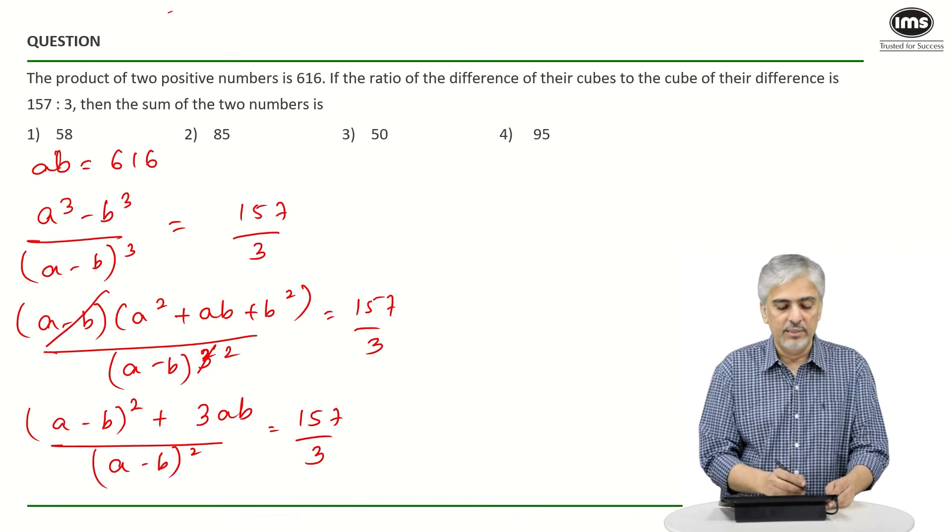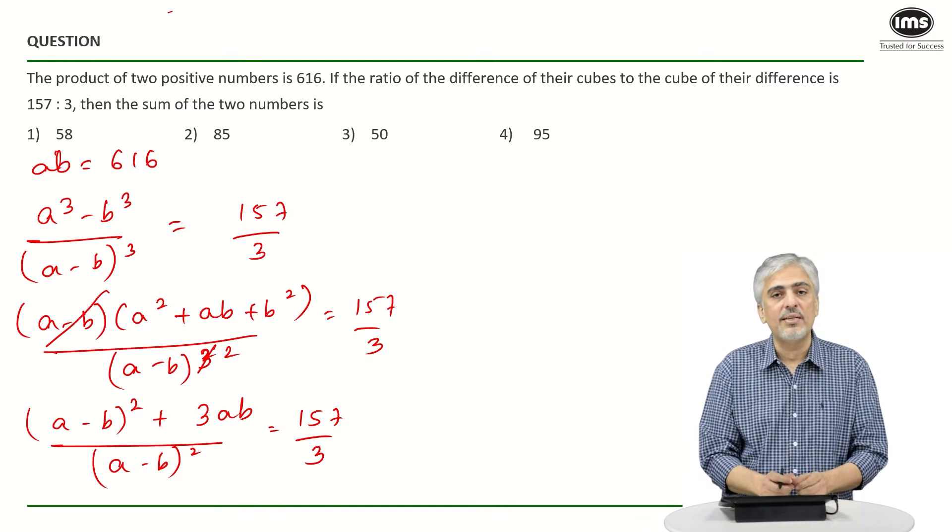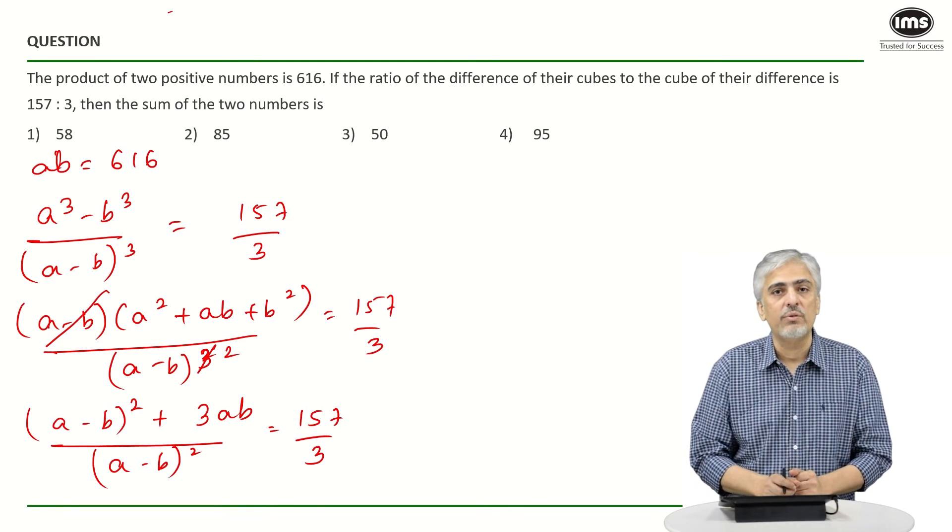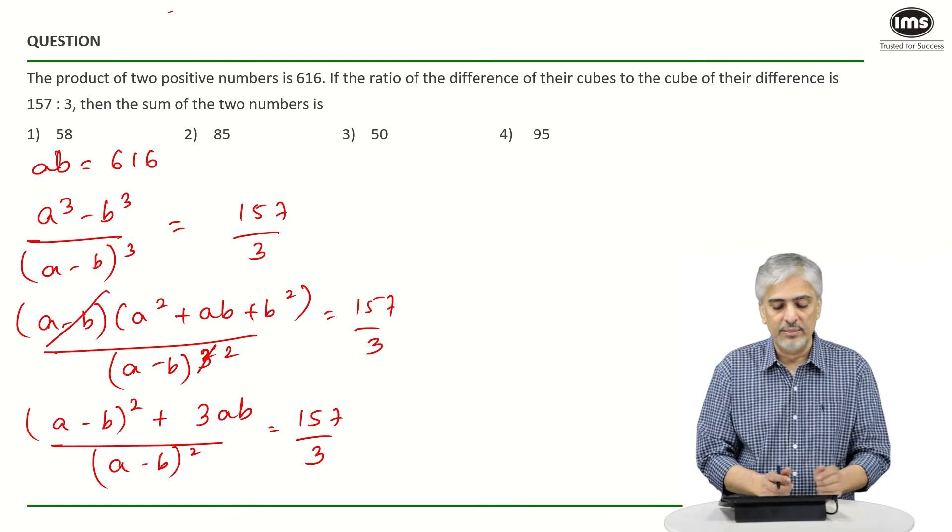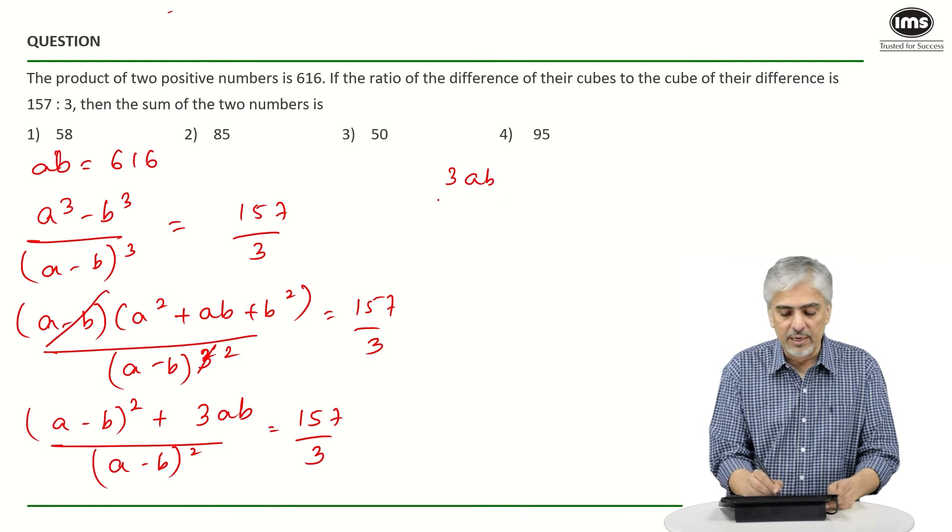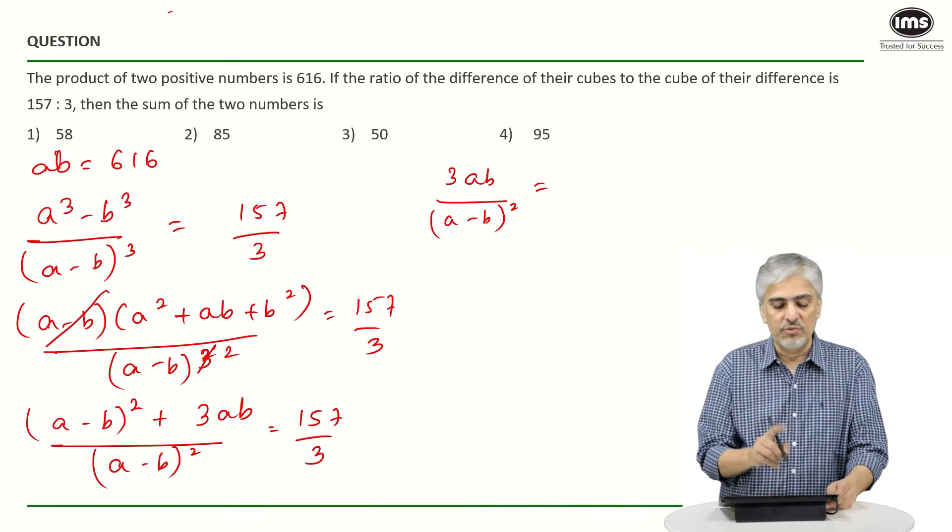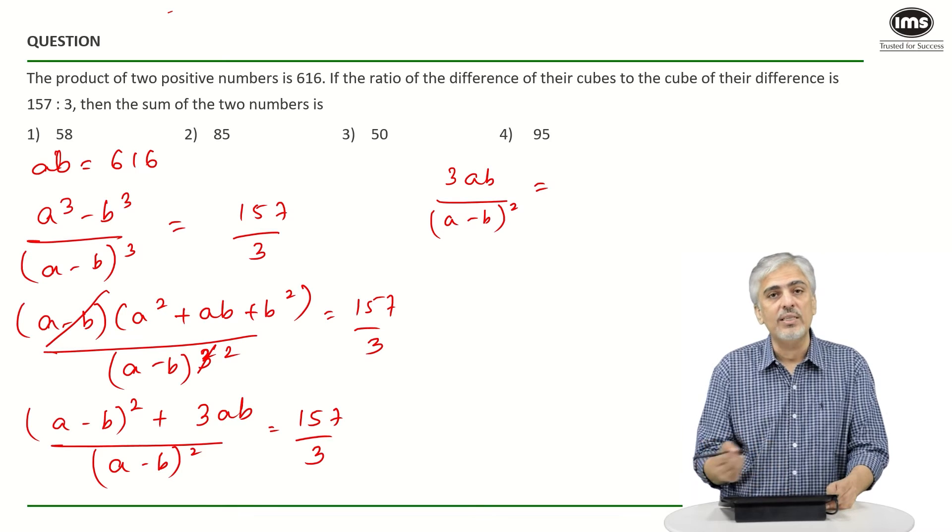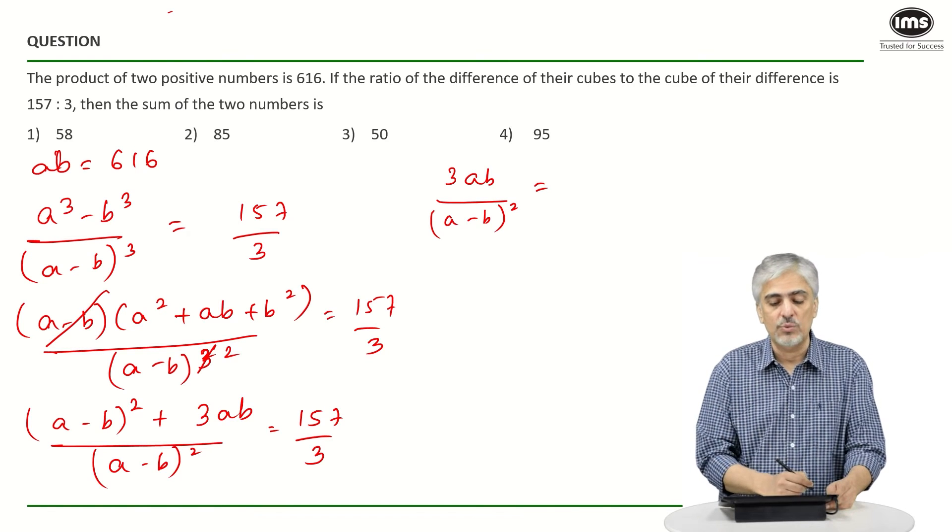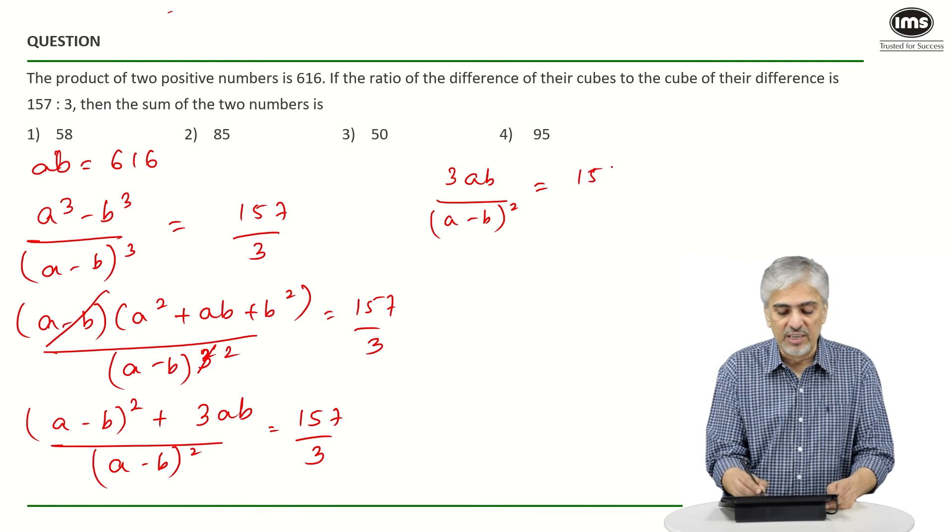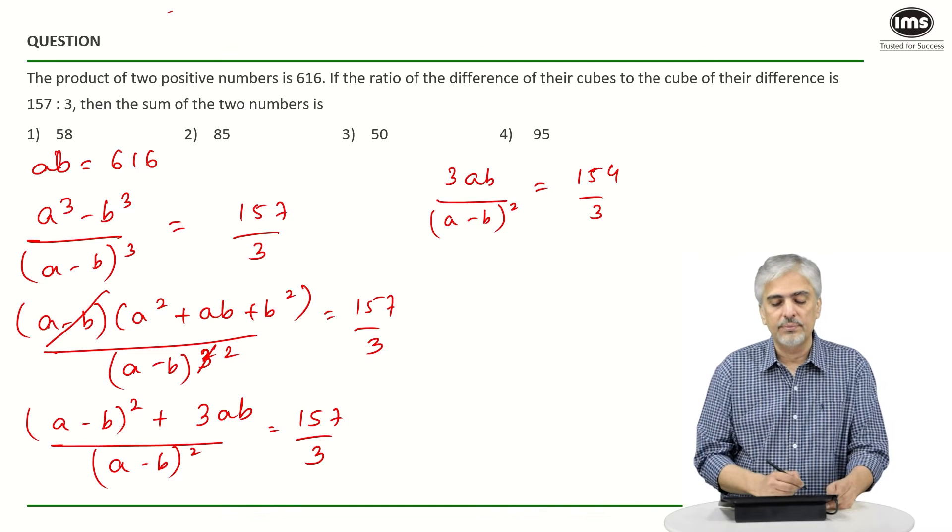If I separate the denominator, the (a minus b)² will cut. So we'll be left with 1. So I'll be left with 3ab upon (a minus b)² is 157 upon 3 minus 1. The 1 comes on the right side becomes minus 1 becomes 154 upon 3.